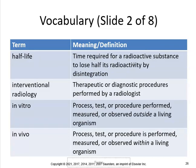Half-life is the time required for a radioactive substance to lose half its radioactivity by disintegration. Many things have half-lives — drugs too. For example, caffeine has a half-life of four hours. If you drink a Red Bull with 80 milligrams of caffeine, it takes four hours to reduce that caffeine from 80 milligrams to 40 milligrams. Every radioactive isotope has a different half-life, which tells you how long it takes your body to eliminate it.